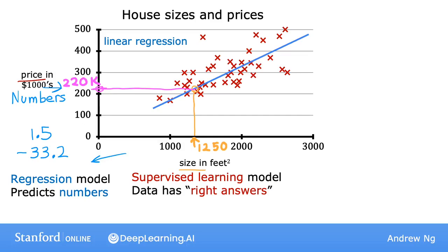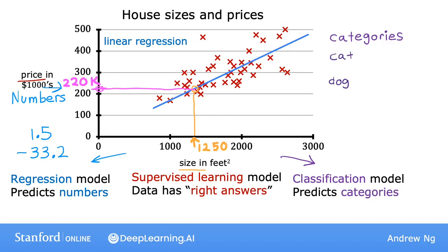And just to remind you, in contrast with the regression model, the other most common type of supervised learning model is called a classification model. A classification model predicts categories or discrete categories, such as predicting if a picture is of a cat, meow, or a dog, woof. Or if given a medical record, it has to predict if a patient has a particular disease. You'll see more about classification models later in this course as well.